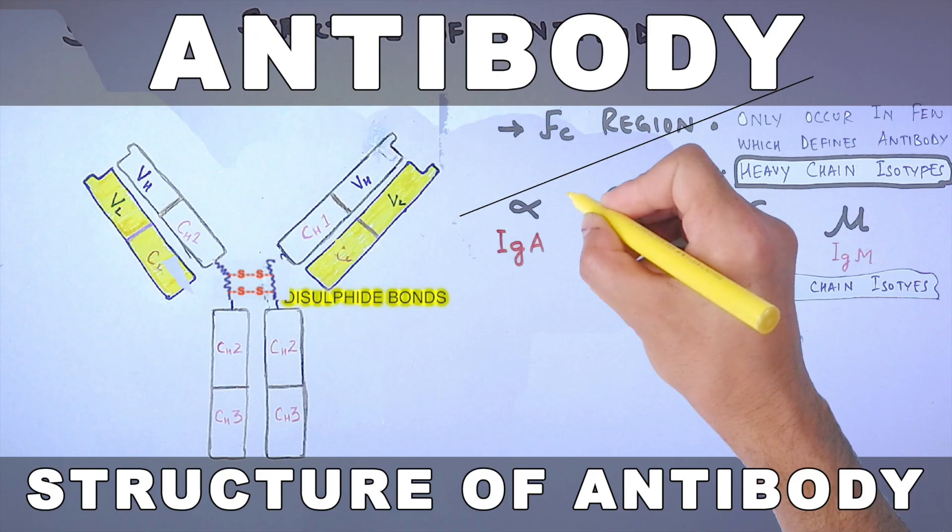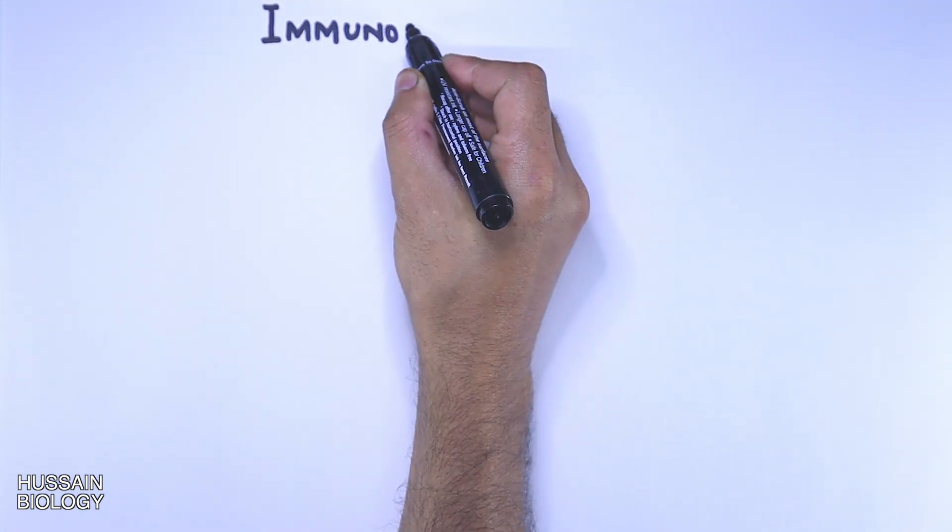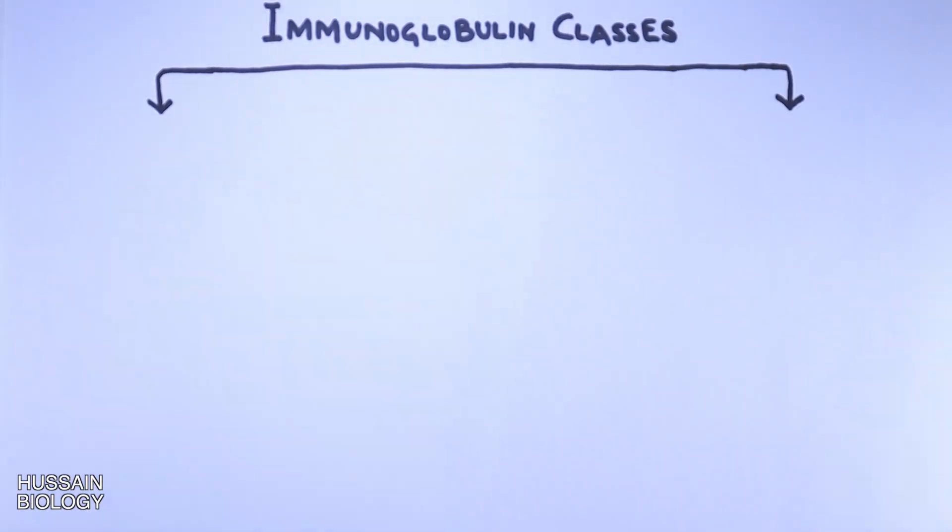In the previous video we discussed about immunoglobulin or antibody structure. If you want to watch that video first, the link is in the description. Now in this video we will be discussing about the immunoglobulin classes in humans.